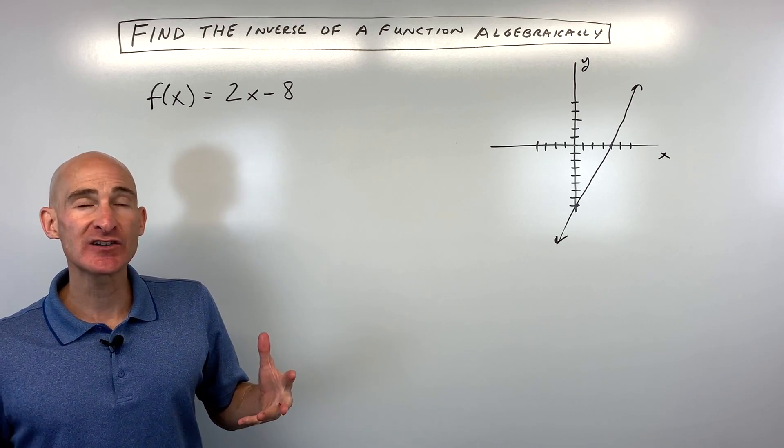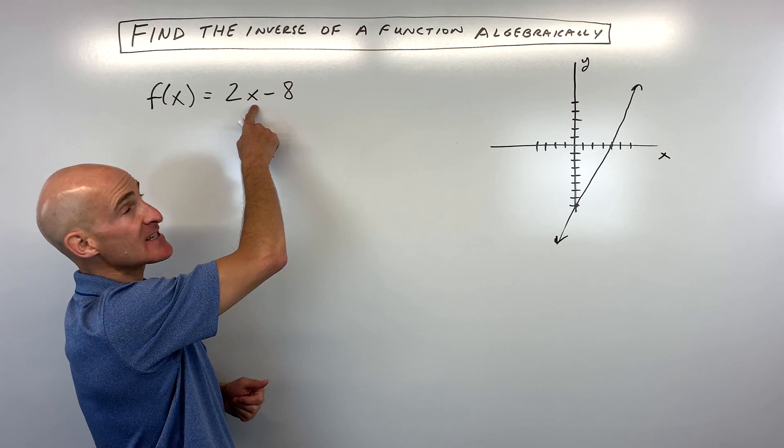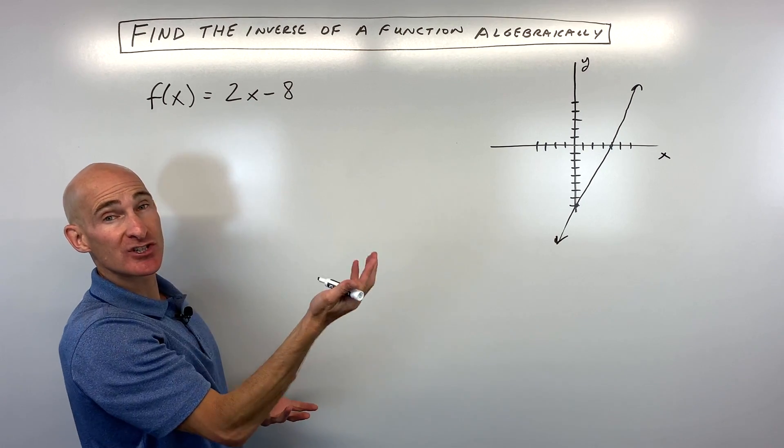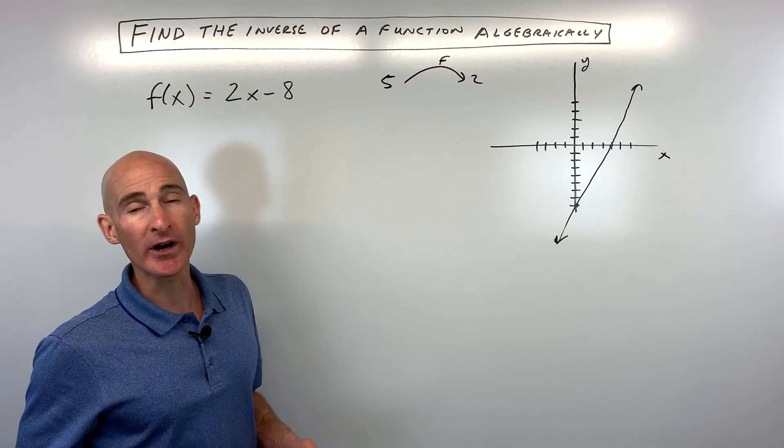Well, what the inverse does is, say for example, if we were to put like 5 in for x here, 2 times 5 is 10, 10 minus 8 is equal to 2. So what that tells us is that 5 is mapping to 2. That's what our function is doing for us.